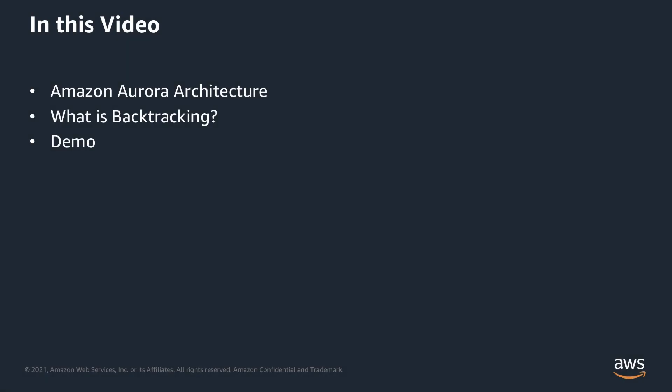In this video, we'll start with a brief introduction about Amazon Aurora and its architecture. Next, we'll discuss about Backtrack and how it is different from a snapshot restore or a point-in-time restore and its use cases. We'll follow up by a Backtrack demo, and we'll finish up with some of the current limitations with Backtrack.